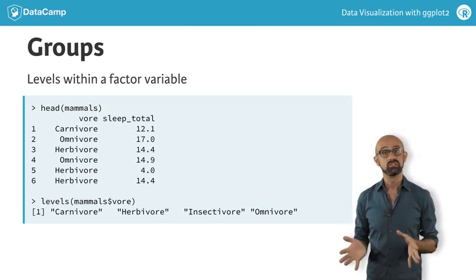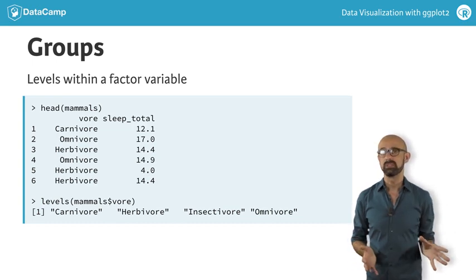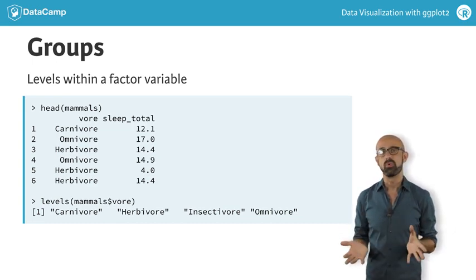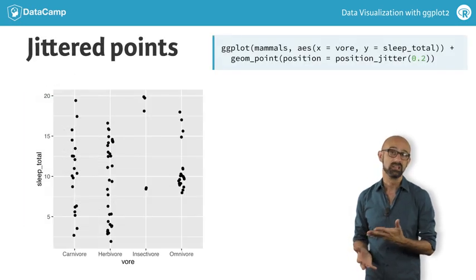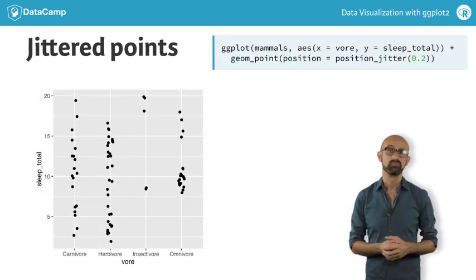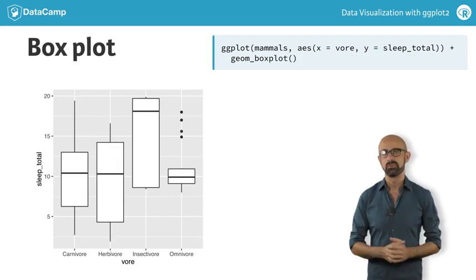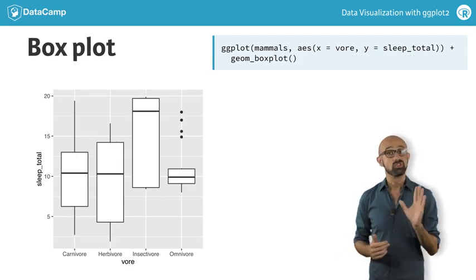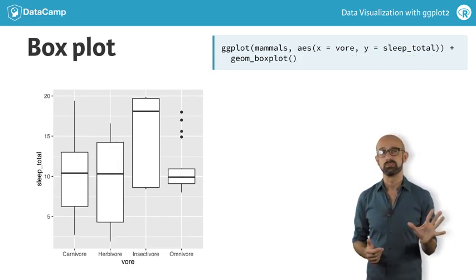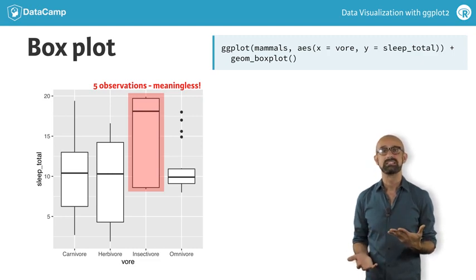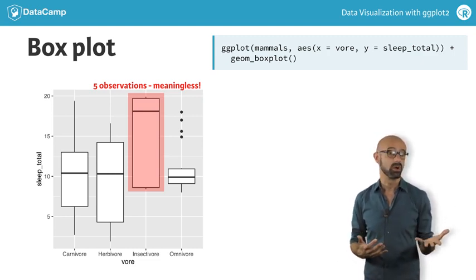The distribution we are interested in is the amount of total sleep time experienced by each mammal. Up until this point, we would have used a plot like this, which is just jittered points. We've seen that we can also use box plots, though in this case it's not really reasonable since the insectivore group only has 5 observations. The problem with box plots is that they don't show information about the number of observations.